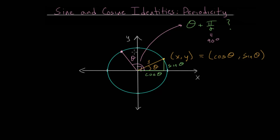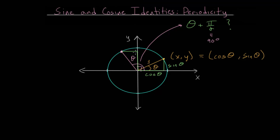We can construct a right triangle here by drawing a line parallel to the x-axis going to the y-axis, and a line perpendicular to the x-axis going down to the origin. We've essentially taken the original triangle and rotated it 90 degrees. Since it has the same angle and the same hypotenuse, it must have the same lengths — this would be the sine of theta, and this vertical component in our new shifted triangle would be the cosine of theta.